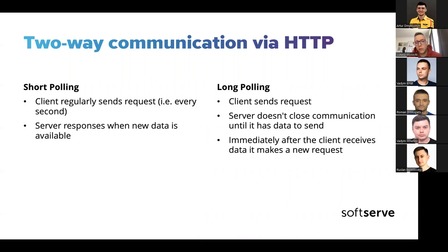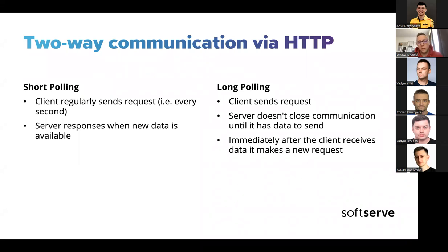The other way is long polling — it's when the client sends a request but the server doesn't close the communication until it has new data for the client. When the data is received by the client, immediately after, the client opens a new connection, and it's like continuous. So as you can see, we can pretend two-way communication, but either way the server cannot start the communication.